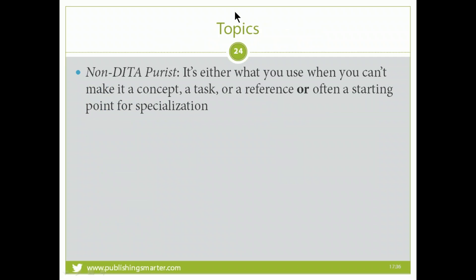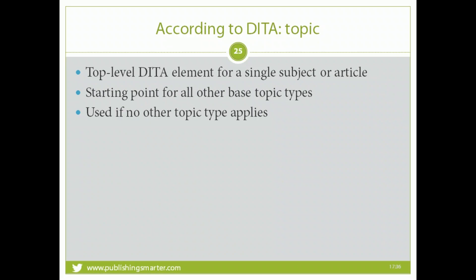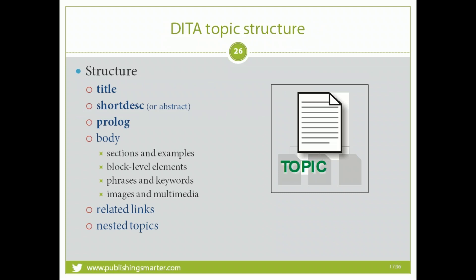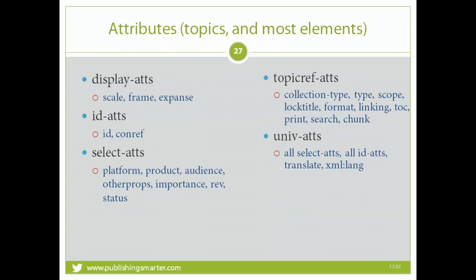For the non-DITA purist, generic topics are used when you can't make something a concept, task, or reference, or as a starting point for specialization. By and large, I suggest you avoid them. According to DITA, it is the top-level element for a single subject or article, the starting point for all base topic types, used only if nothing else applies. Try to make sure your content is a concept, a task, or a reference. We've now covered all four core topic types in DITA: task, concept, reference, and generic topic.